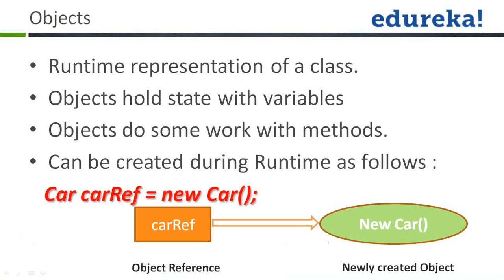The third statement is: objects do some work with methods. You can use a method using the object, and we'll be discussing that once we cover the methods section. Objects can be created during runtime as follows: first write the name of the class, then mention the object name — it could be any name — then equals to new and Car with parenthesis, and put the semicolon. This is how you create a new object.